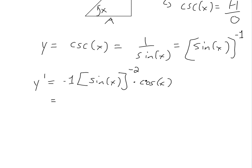Now if we simplify this further, we put this back to the bottom. We'll have negative 1 over sine squared x times cos of x.